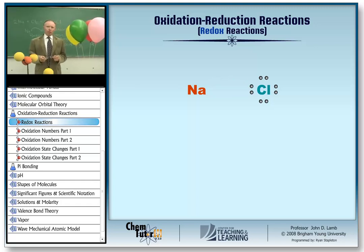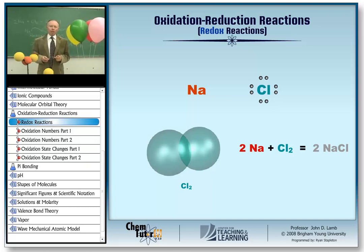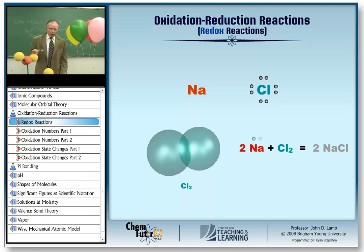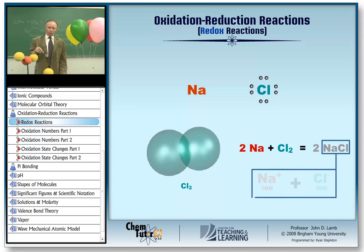This scenario, as shown, isn't very realistic. Chlorine doesn't exist as single atoms in nature, but as dichlorine molecules. So if we were to write this reaction, it would look like this: two sodium atoms each transferring one electron to a chlorine molecule to produce two separate chloride ions. The reaction as written is a balanced redox reaction, and the transfer of electrons is hidden in the way the reaction is written. The ionic product NaCl really consists of separate Na+ ions and Cl- ions, which are the result of this electron transfer.